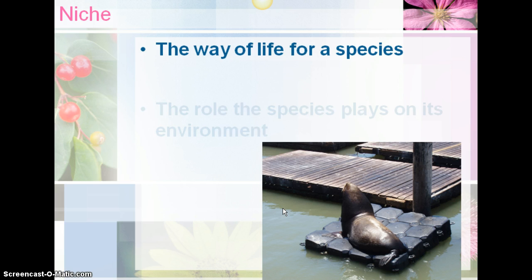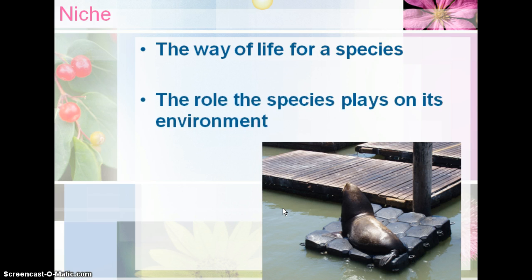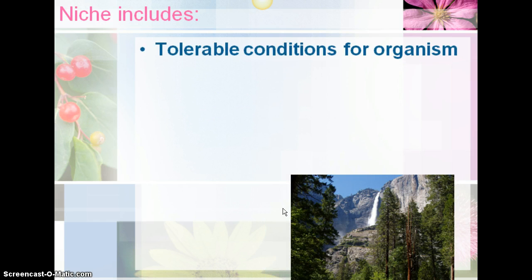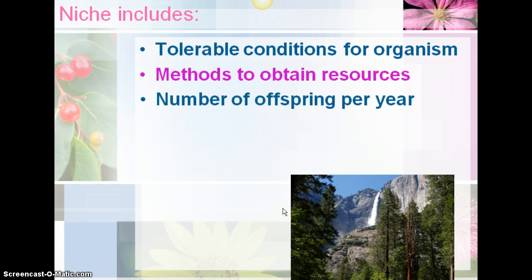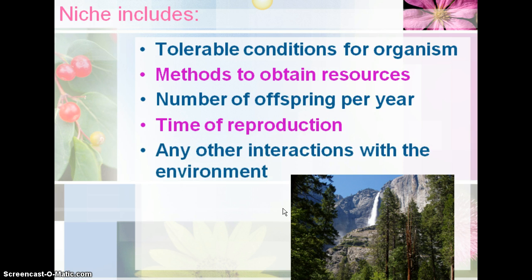The term niche is a way of life for a species — how the species lives daily and the role that species plays in the environment. There are five things that make up a niche: the tolerable conditions for the organism, which is the tolerance range we already talked about; how they obtain resources; the number of offspring they produce per year; their time of reproduction; and any other interactions with the environment. All of those things play a role in their niche.